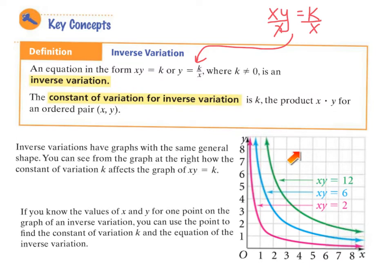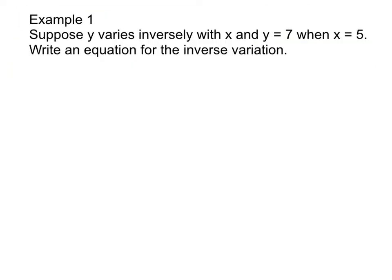You can see from the graph here how the constant of variation, which is your k, affects the graph. If you know the values of x and y for a point on the graph of an inverse variation, you can use the point to find the constant of variation k and the equation of the inverse. Now, this is really easy. To find k, what do you do? You take x times y. So in order to find k, you would just multiply the x-coordinate times the y. So example number one, I want you to write an equation for the inverse variation knowing that y varies inversely with x. And we know here that y is 7 and x is 5. This is super easy. If you memorize this, which you must, x times y equals your constant of variation.